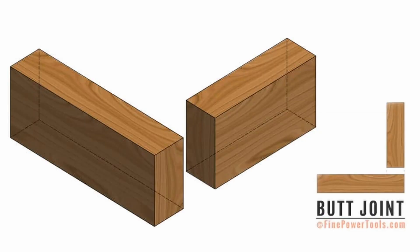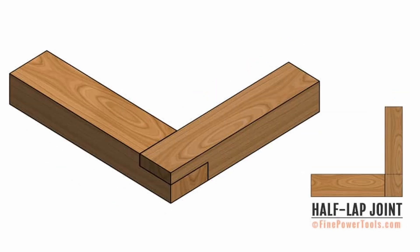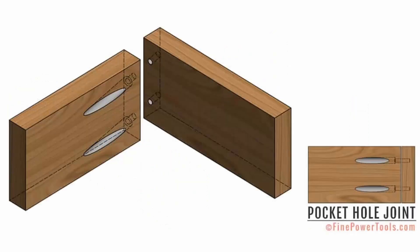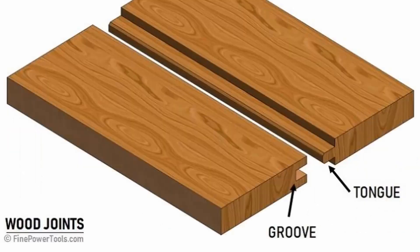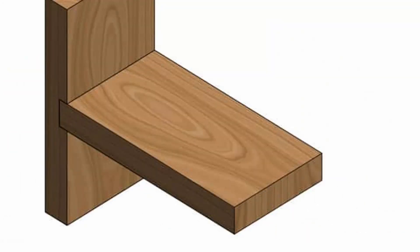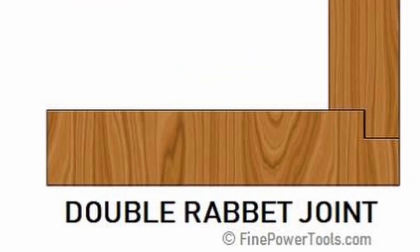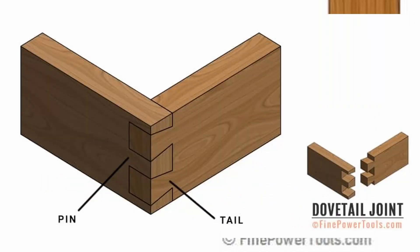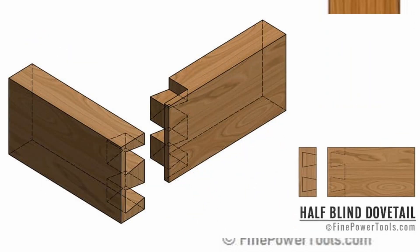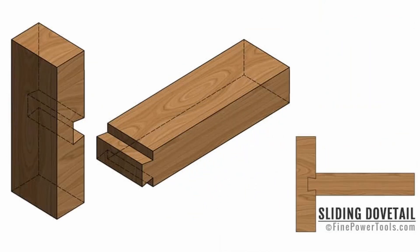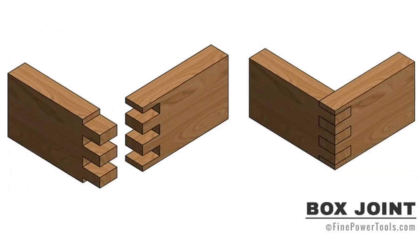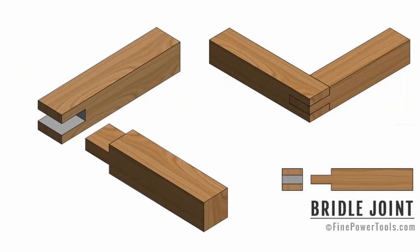A butt, miter, or half lap joint; cross lap; pocket hole; tongue and groove joint; a housing, stopped housing, or mortise and tenon joint; a loose mortise and tenon joint using a biscuit; a rebate or rabbet joint; a double rabbet joint; a dovetail, half blind dovetail, or sliding dovetail joint. Additionally, you could consider a box joint, bridal joint, or finger joint.